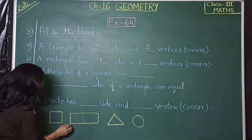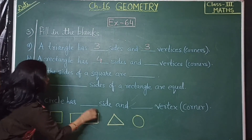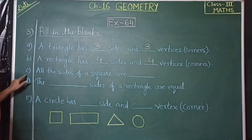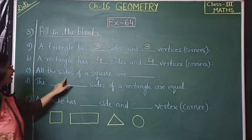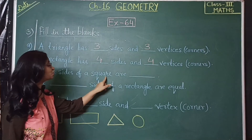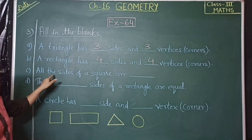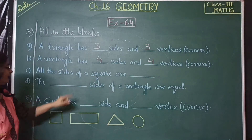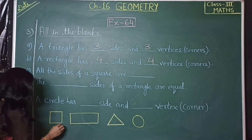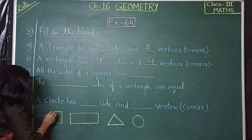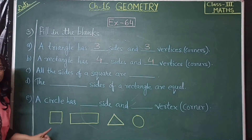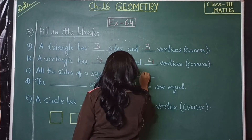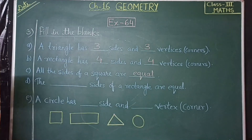B: a rectangle has four sides — one, two, three, four — and four vertices, which are its corners. C: all the sides of a square are equal. A square has four sides and all four sides are equal.